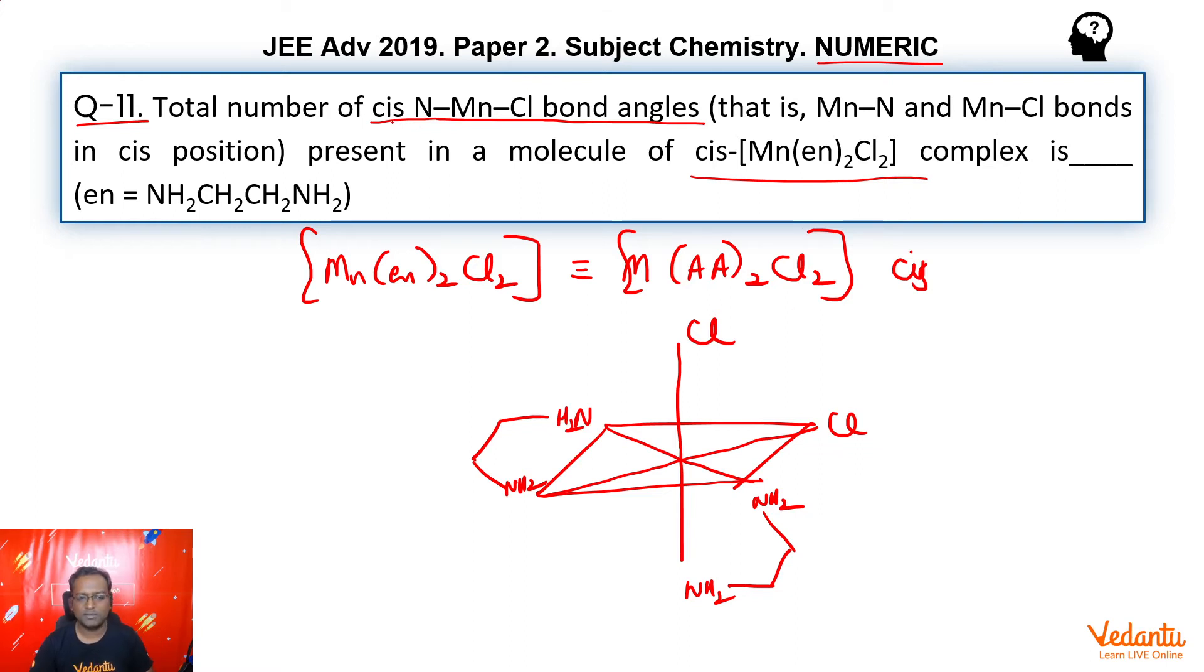Now, the question asks for the number of cis N-Mn-Cl bonds. When we say cis N-Mn-Cl bond, we mean 90 degree bonds. And if we said trans, we would mean 180 degree bonds. So we have to look at 90 degree bonds: N, manganese, and Cl.